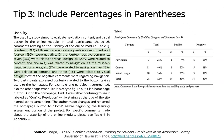Tip 3: Include percentages in parentheses. One thing that's frequently encountered when working with evaluation results is the need to report counts or frequencies — in other words, to tell readers how many times something happened. Whenever a count or frequency is reported, it is customary to also provide the relevant percentage. For example: '14 (50%) of those comments were positive in sentiment, and 14 (50%) were negative.' You can think of these percentages as doing the math for the reader, making it easier for them to make sense of your results.